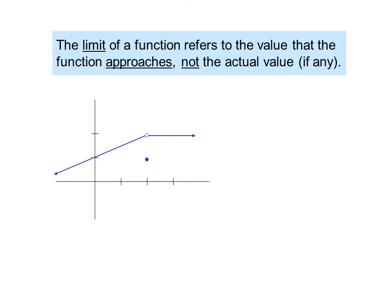In this graph, the limit as x approaches 2 of f of x equals 2, because coming from either the left or the right, the y value appears to approach 2 — not 1. It does not matter that the limit is 2 but the value of the function is 1. As long as we are looking for the limit, we don't care what the value of the function is.